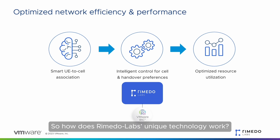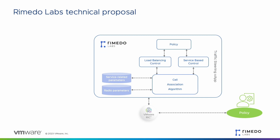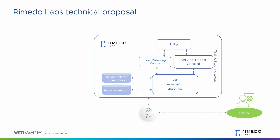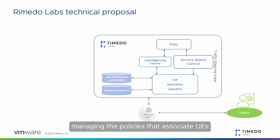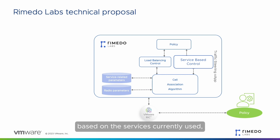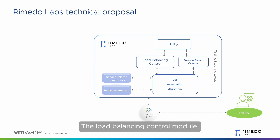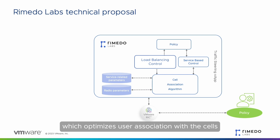So how does Remedo Labs' unique technology work? The X-App is composed of a service-based control module managing the policies that associate UEs with specific types of cells based on the services currently used, as derived by the 5QI parameter. The load balancing control module optimizes user association with the cells to keep the load of base stations balanced.